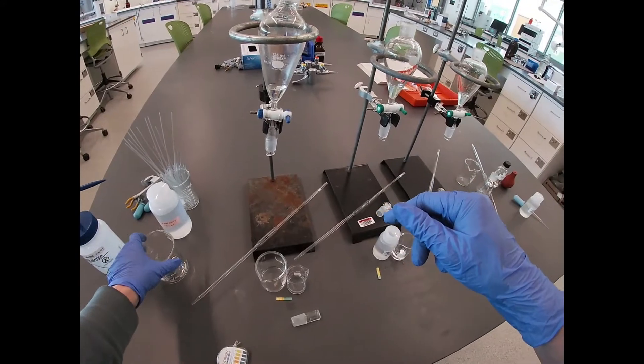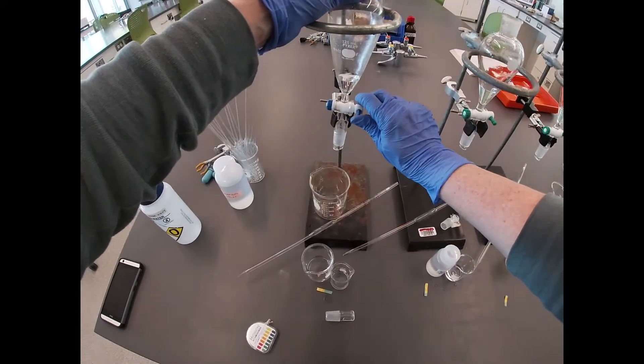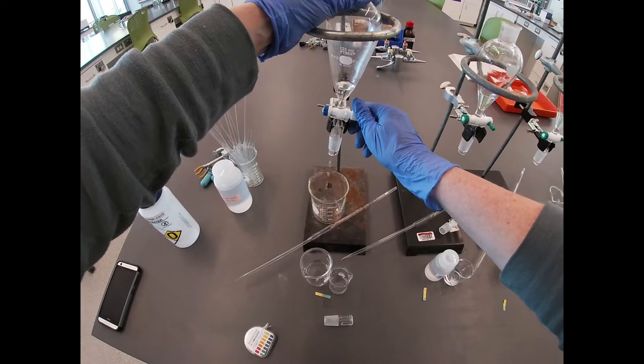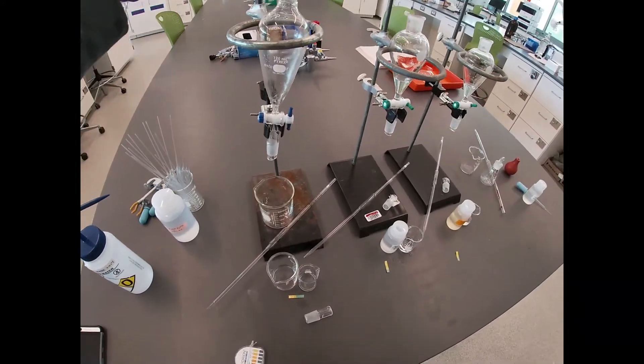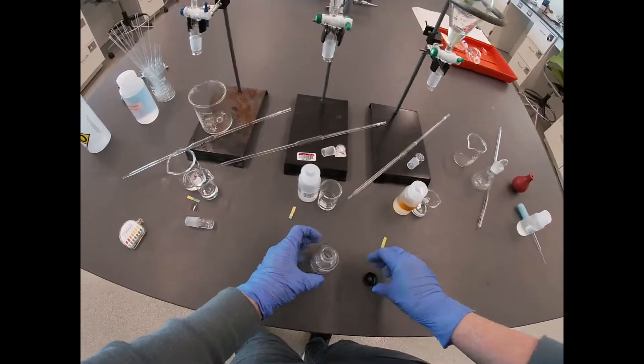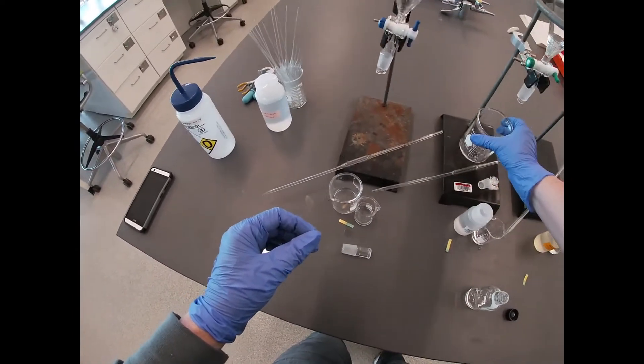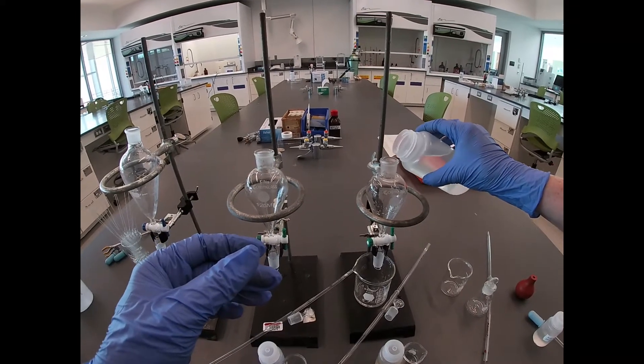What we're going to do since we do not have an additional set of extraction funnels is drain these in a quick chloroform rinse, and then we'll rinse them with some of our acid before we do the extraction.